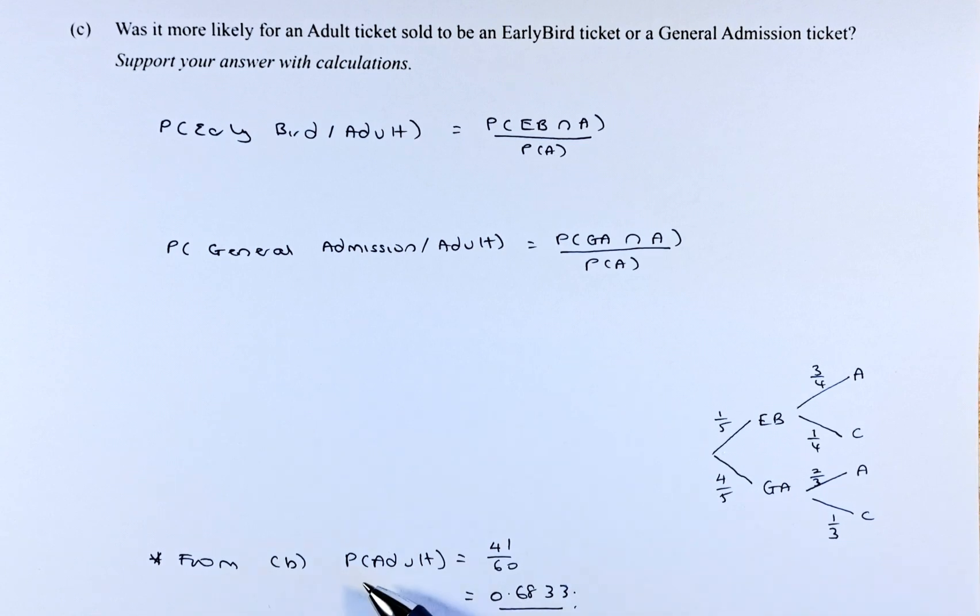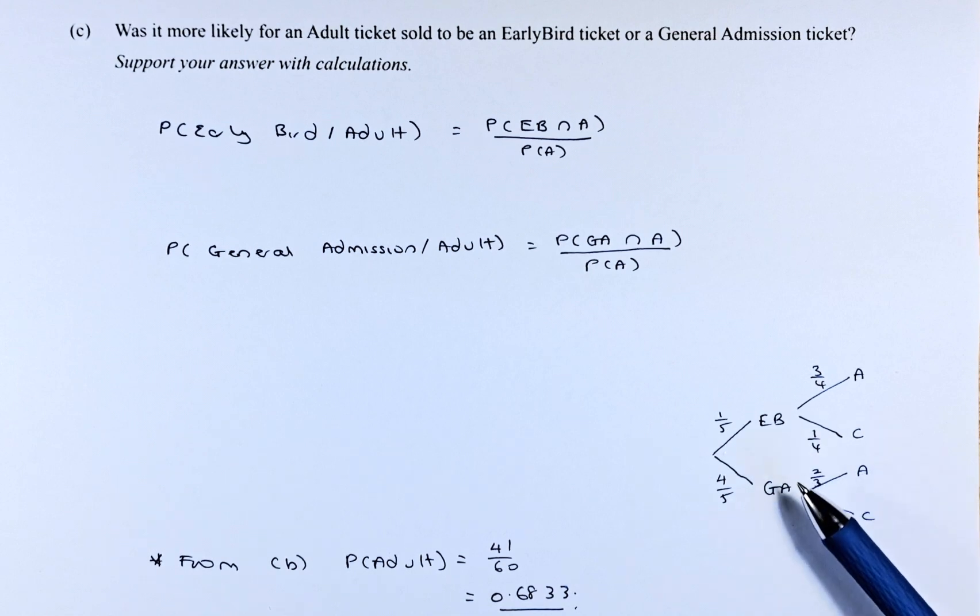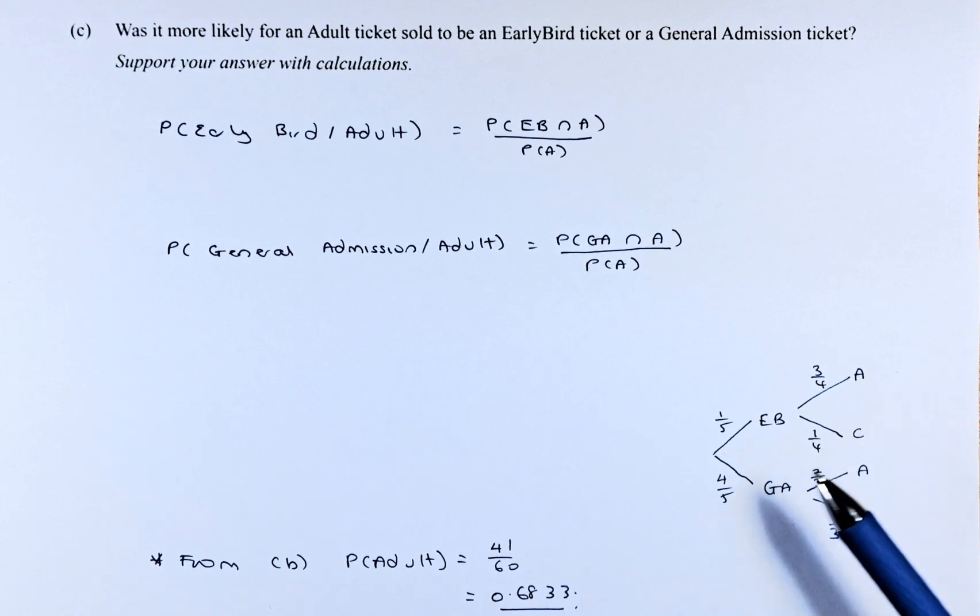From part B, the probability of adult is 41 over 60, or 0.6833, which we will use in our calculation. We also have the tree diagram with probabilities for early bird, general admission, adult, and child. All the probabilities are given here, and we are going to calculate the conditional probabilities.